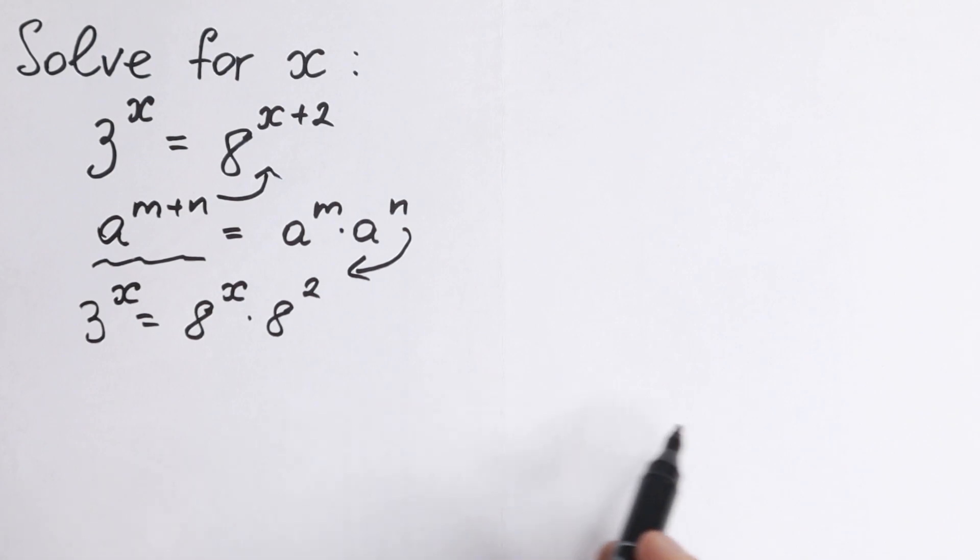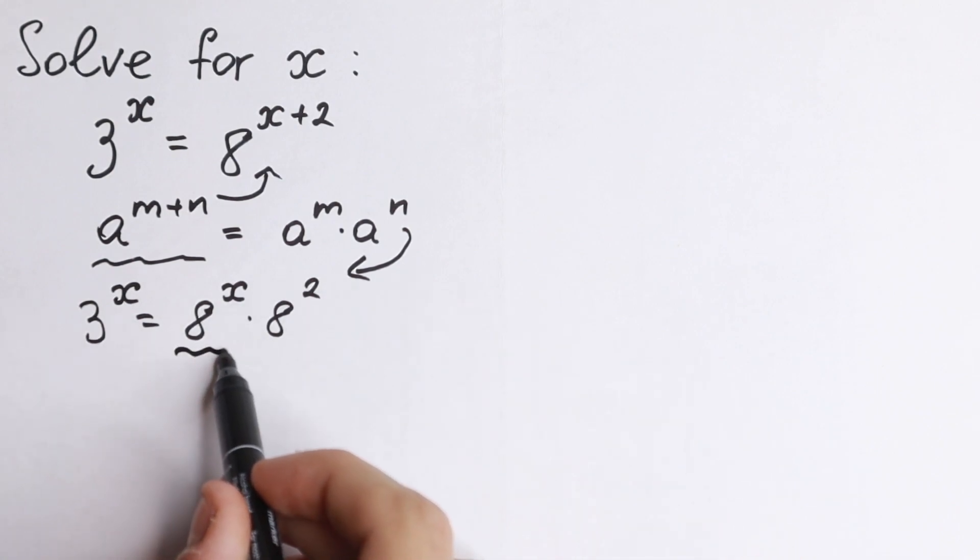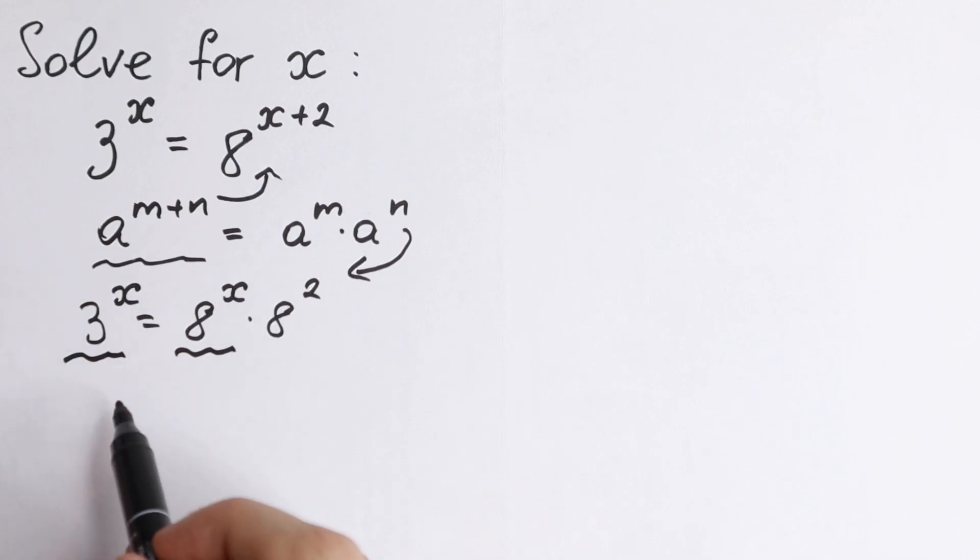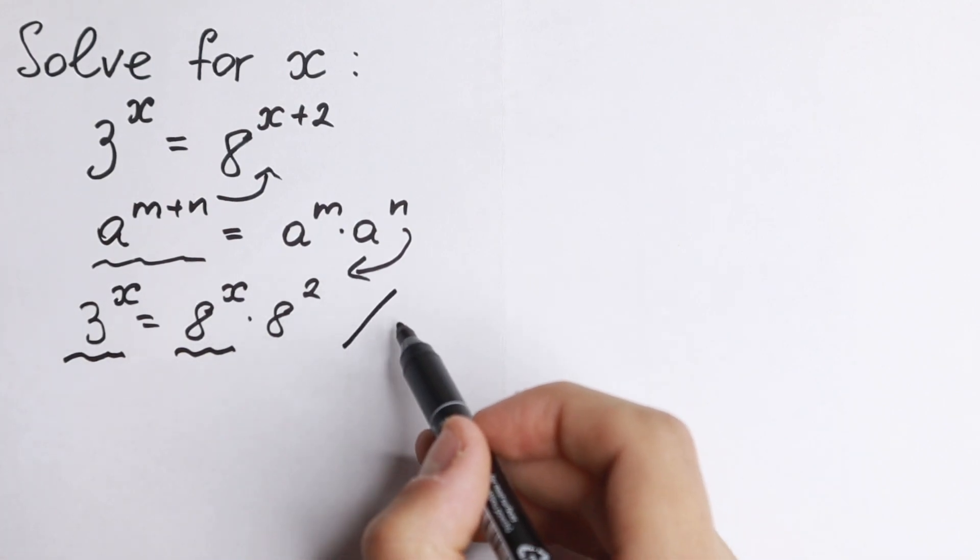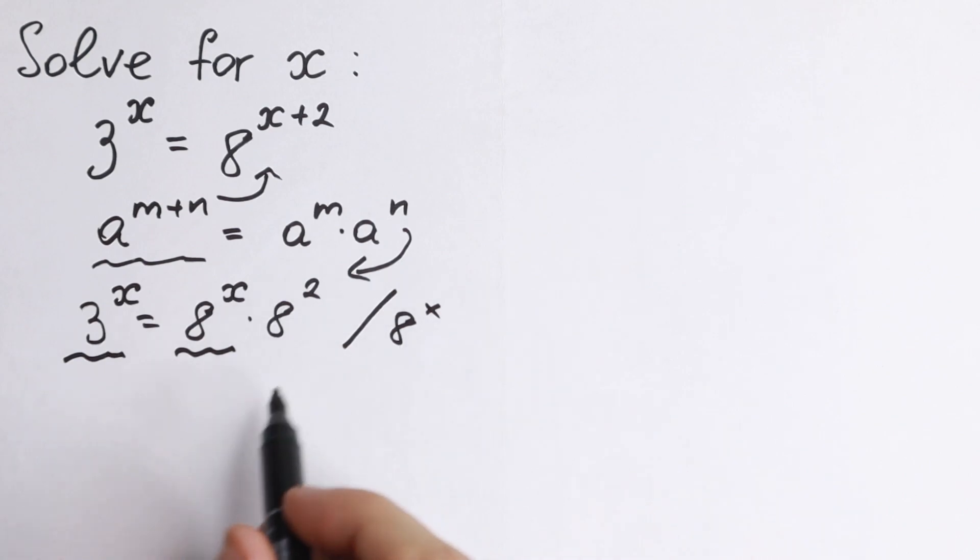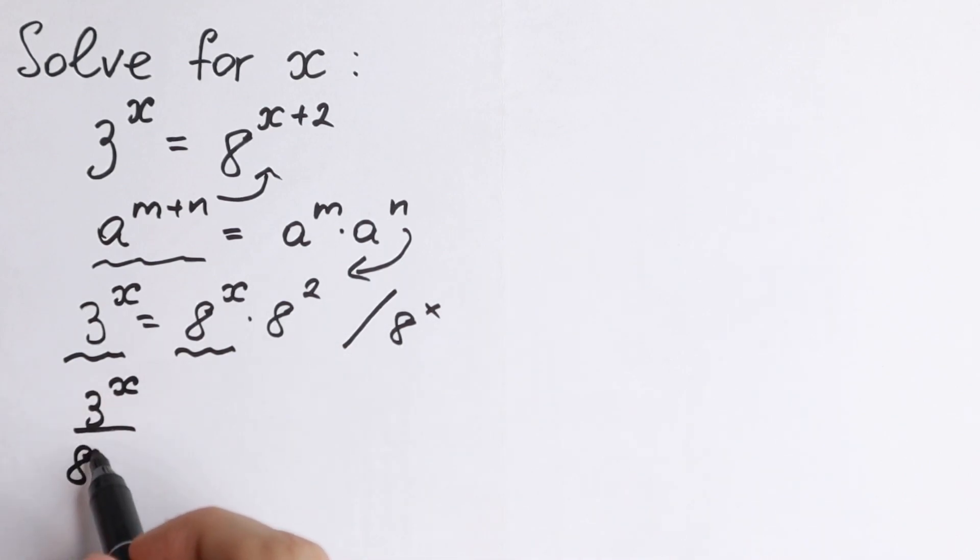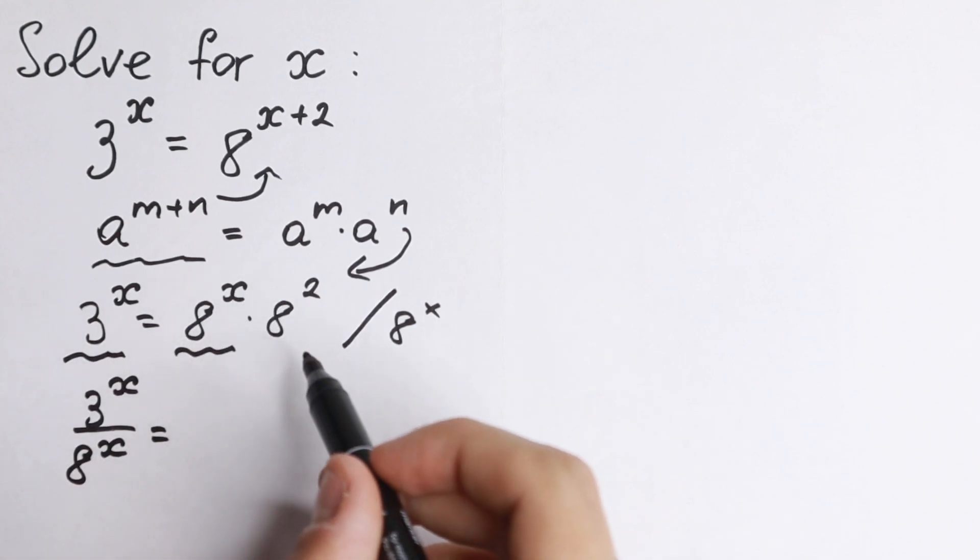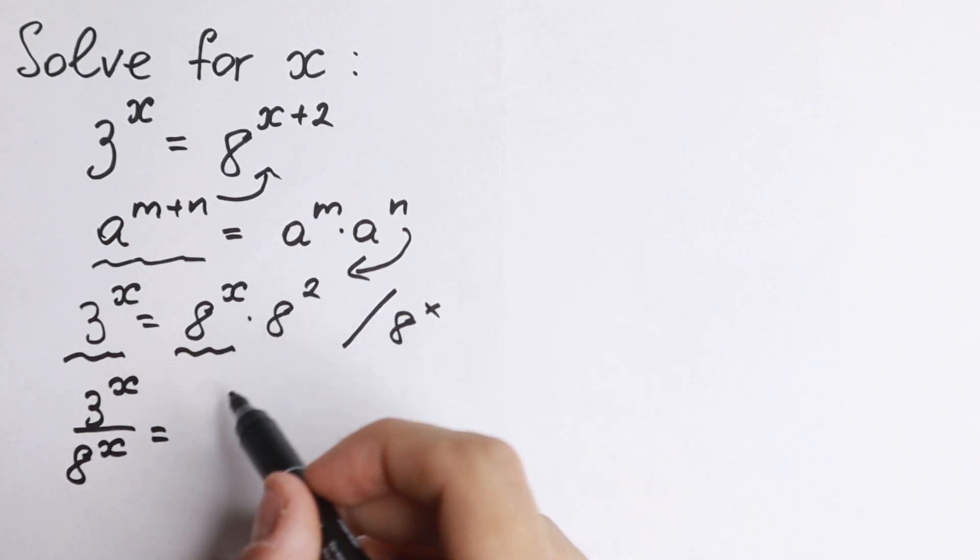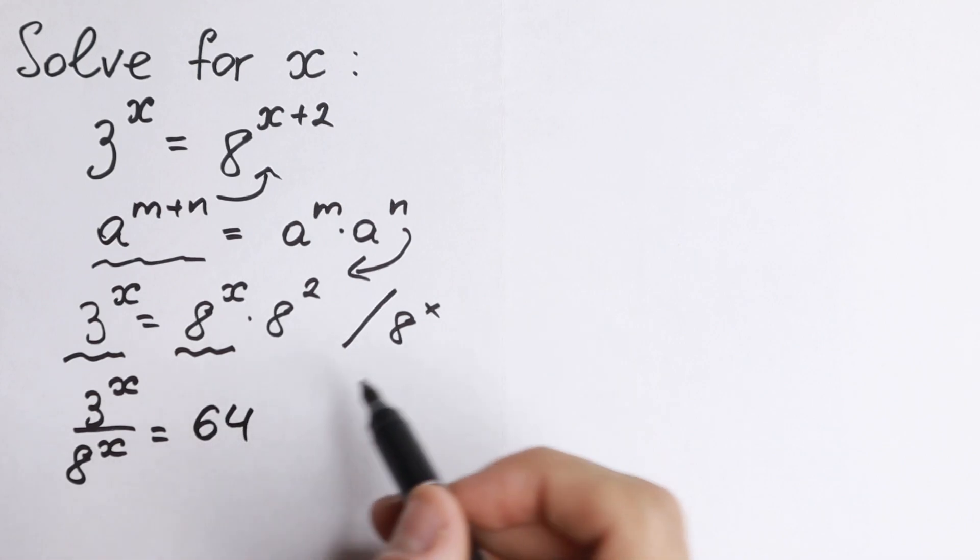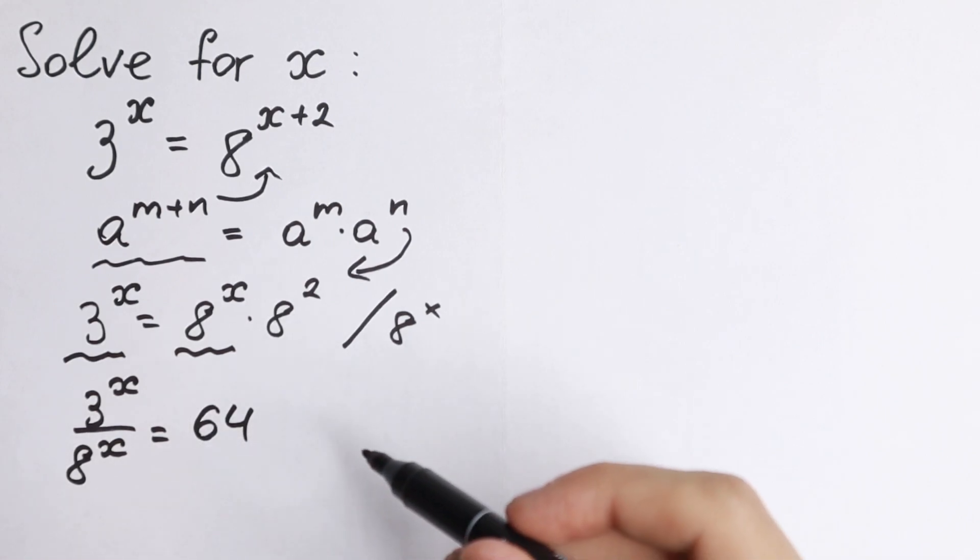What are we going to do next? Take a look right here. We have 8^x and we have 3^x. We need x's on the left-hand side, so we divide both sides by 8^x. We will have 3^x over 8^x equal to... we cancel it on the right-hand side and we will have 8^2, which is 64.